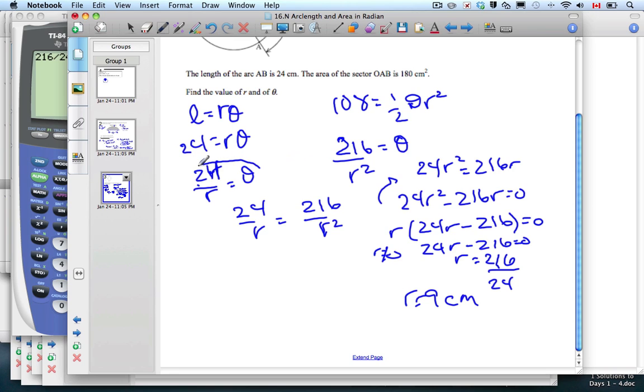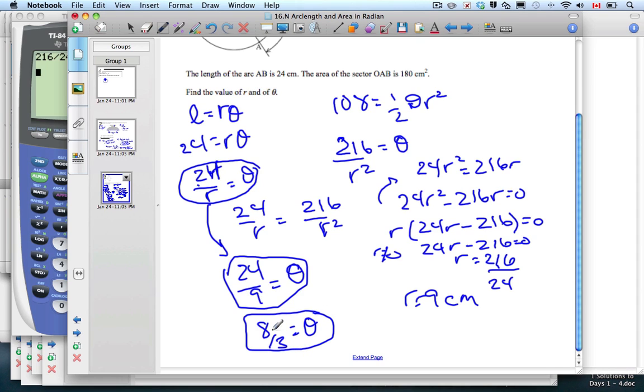I have to find theta. It's a Friday afternoon. So 24 over 9 is theta. Can we reduce that at all? Divided by 3, it's 8 over 3. I learned something that if you don't reduce your fractions to simplest forms, you lose a point on your IB exam.